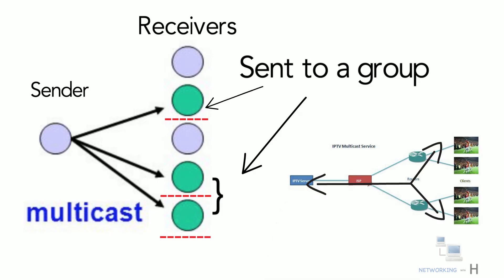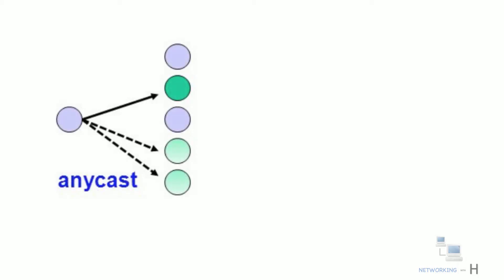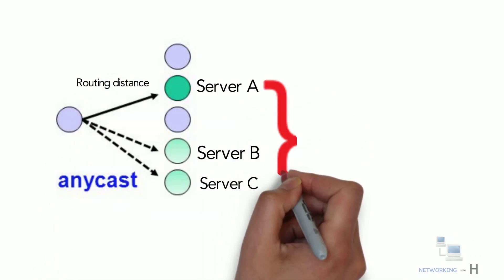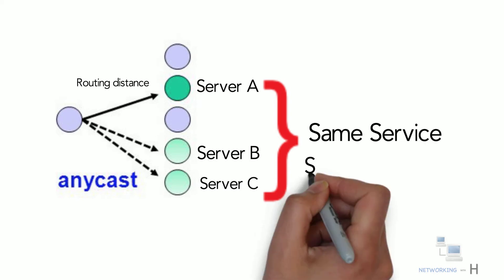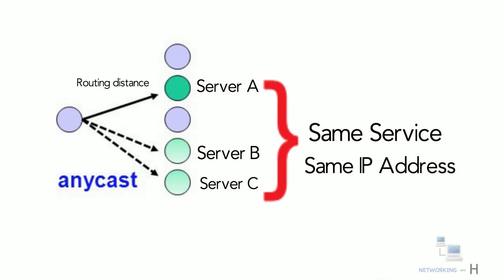Anycast is the type of IPv6 network communication in which IPv6 datagrams from a source are routed to the nearest device, in terms of routing distance, from a group of servers which provide the same service. Anycast, also known as IP anycast, is a networking technique that allows multiple machines to share the same IP address. Every node which provides the same service is configured with the same anycast destination address, and based on the location of the user request, the router sends it to the closest machine.